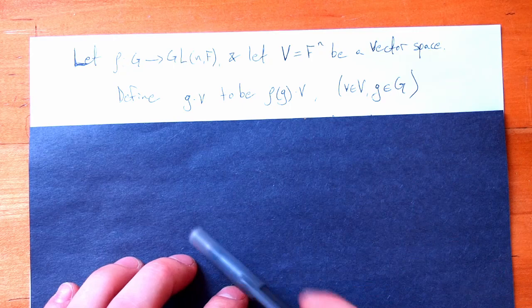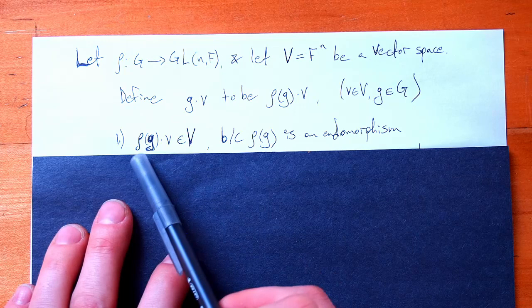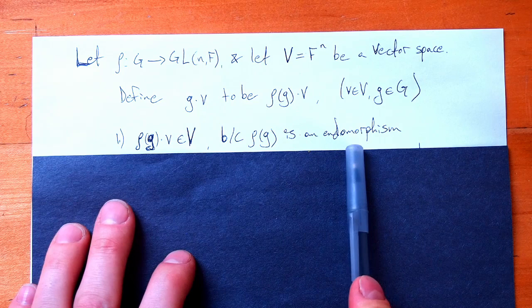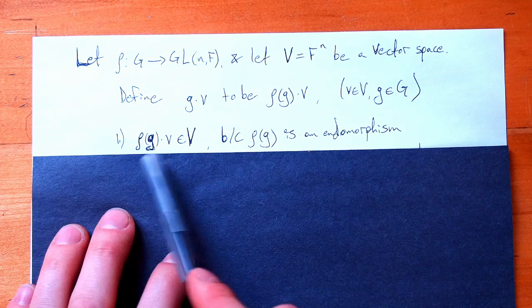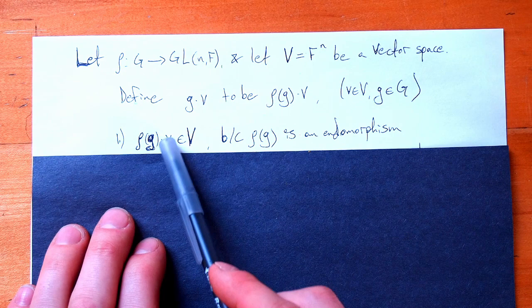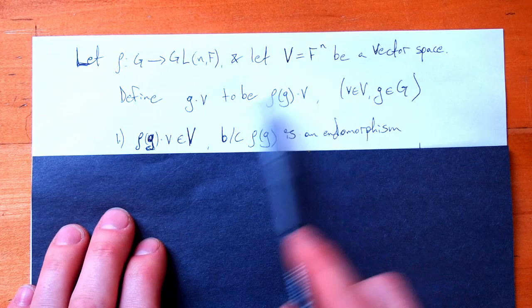We say that a group element acting on our vector is just: map it to a matrix and let that matrix multiply with our vector. A matrix multiplied with a vector ends up back in our vector space because our representation — this matrix — is an endomorphism, meaning a linear map back to your vector space. The matrix has elements in the same field as the vector, so you're never going to have a real vector mapped by a complex matrix. If your vector is real, your representation is real — so we have closure.